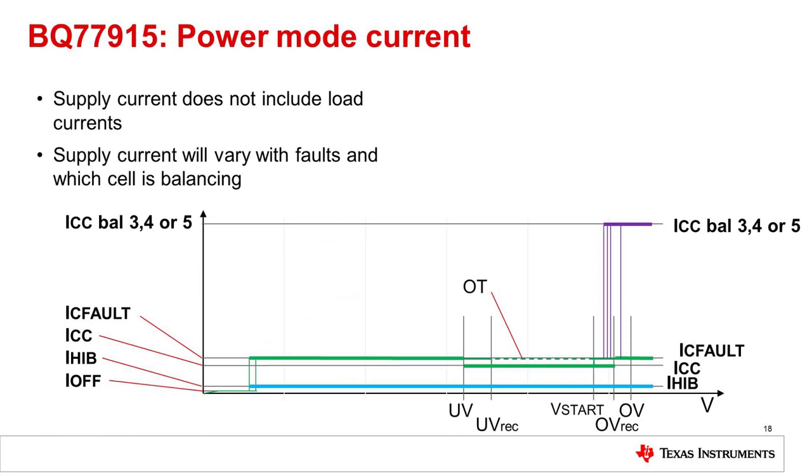Another aspect of cell balancing is the supply current. The device includes a charge pump to provide adequate drive for the internal balance FETs when cells 3, 4, or 5 balance. The value is shown on the datasheet for ICC when balancing cells 3, 4, or 5.